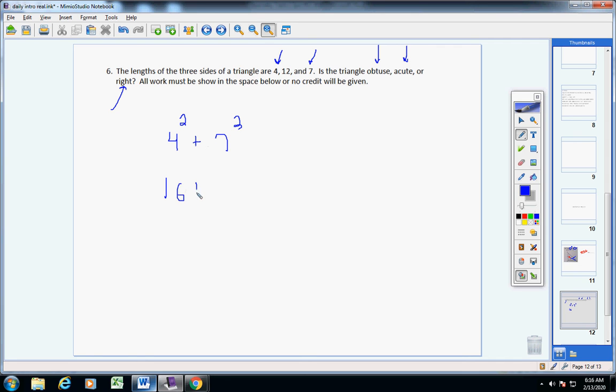Add those together and you will get 65. Got it? Then you take the longer side. You put it over here and you square it. Twelve times twelve is 144. And then you compare these two numbers. Are you ready, Chris? Write this down. Learn.